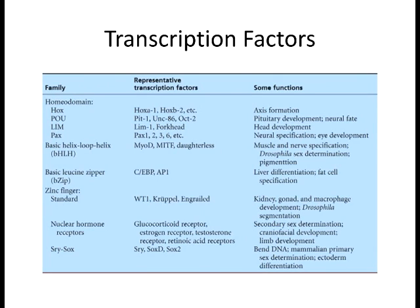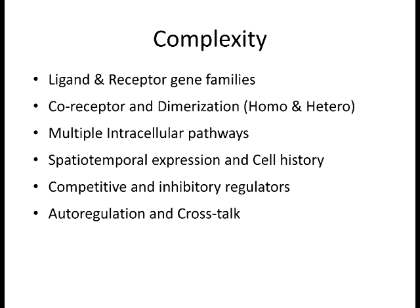Sometimes you don't just have one receptor—you need the right combination of two. In some of these pathways there are three or four different ways the same signal can go through. We have the canonical Wnt pathway and then the non-canonical Wnt pathway.